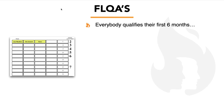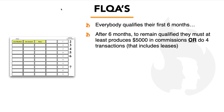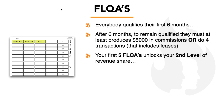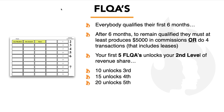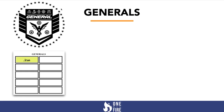FLQAs — everybody qualifies their first six months. After six months, to remain qualified they must produce at least $5,000 in commissions or complete four transactions. Your first five agents unlock your second level of revenue share. Ten direct FLQAs unlocks your third, 15 unlocks your fourth, 20 unlocks your fifth, 25 unlocks your sixth, and 40 unlocks your seventh.